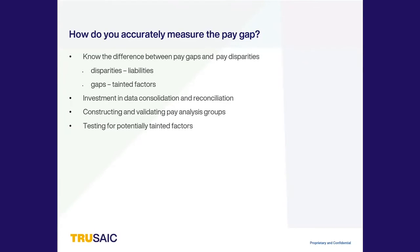How do you accurately measure the pay gap? There are two parts to this. This slide highlights four elements that are necessary foundations for an accurate pay equity analysis. The first is knowing the difference between a gap and a disparity. The pay gap is the overall average pay difference between protected classes, such as men and women, before controlling for business factors that determine pay.